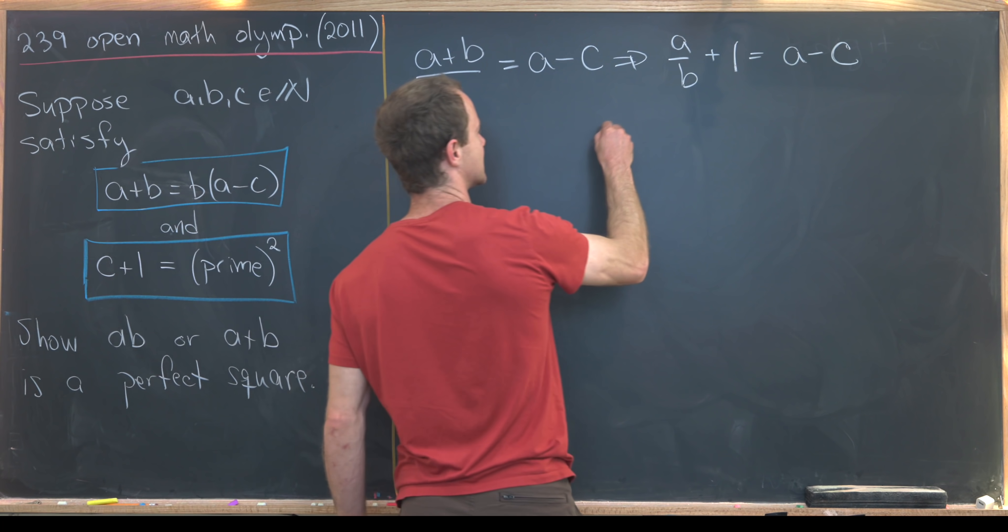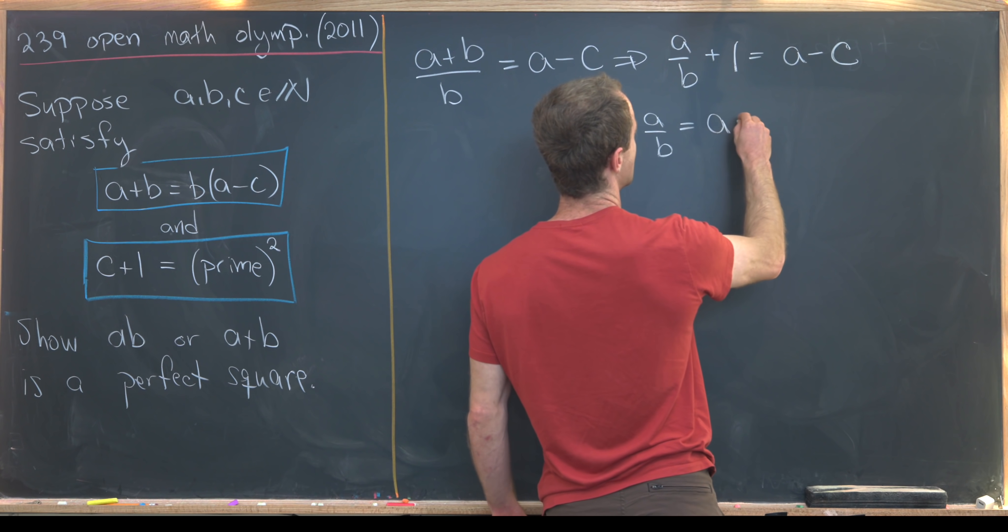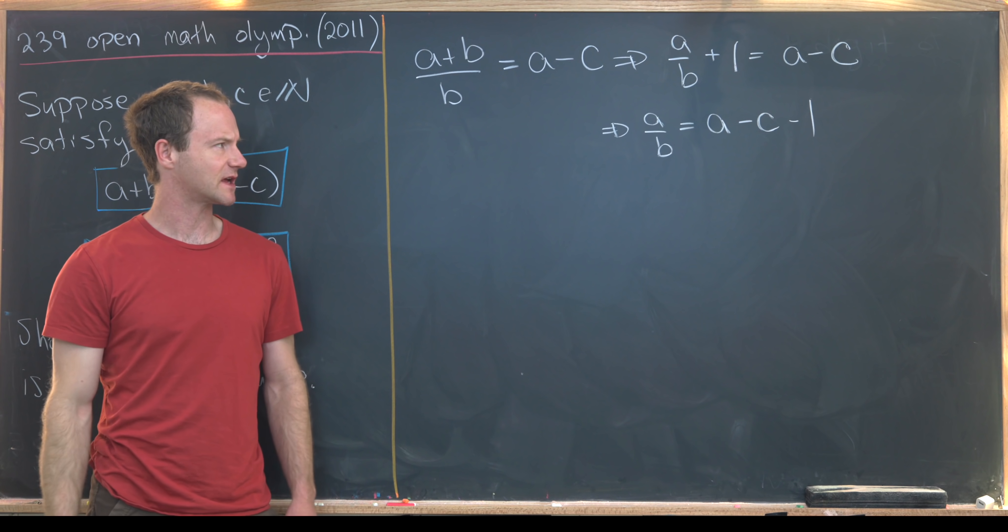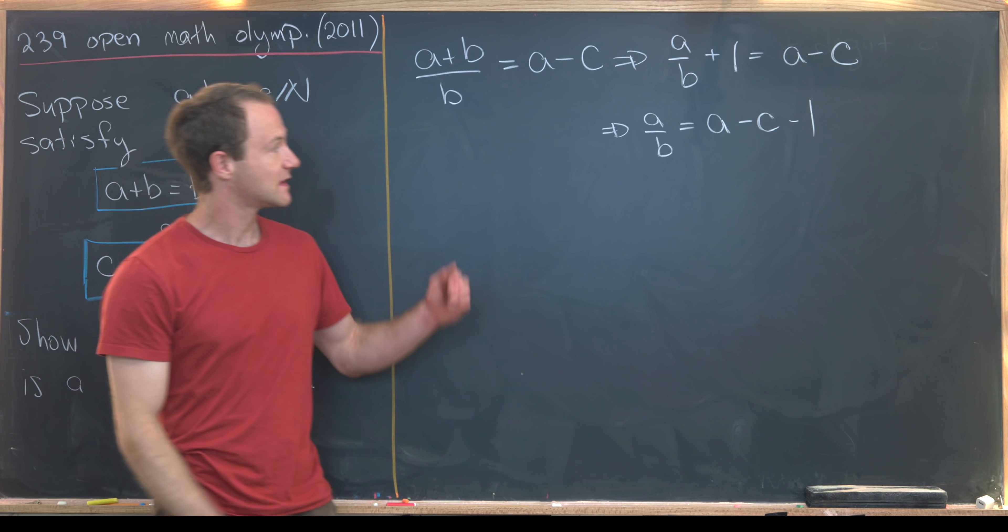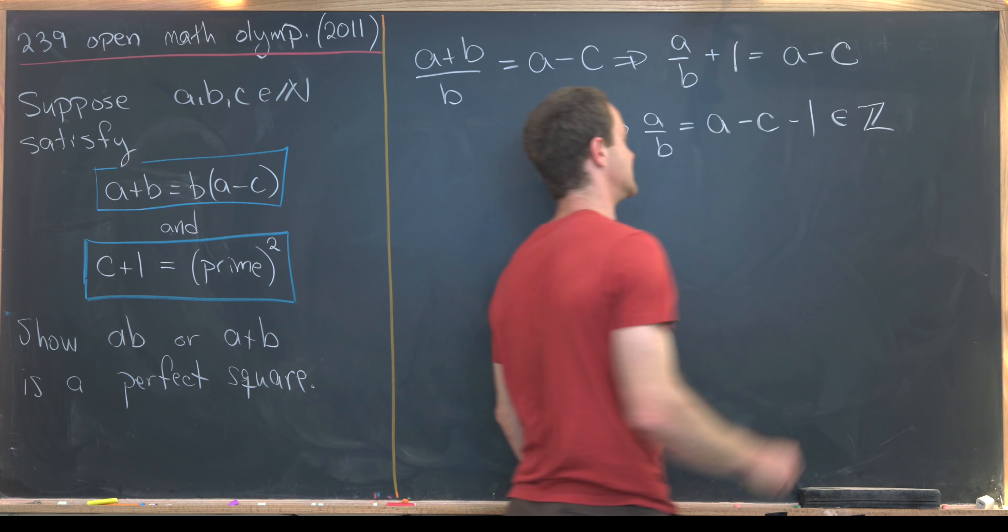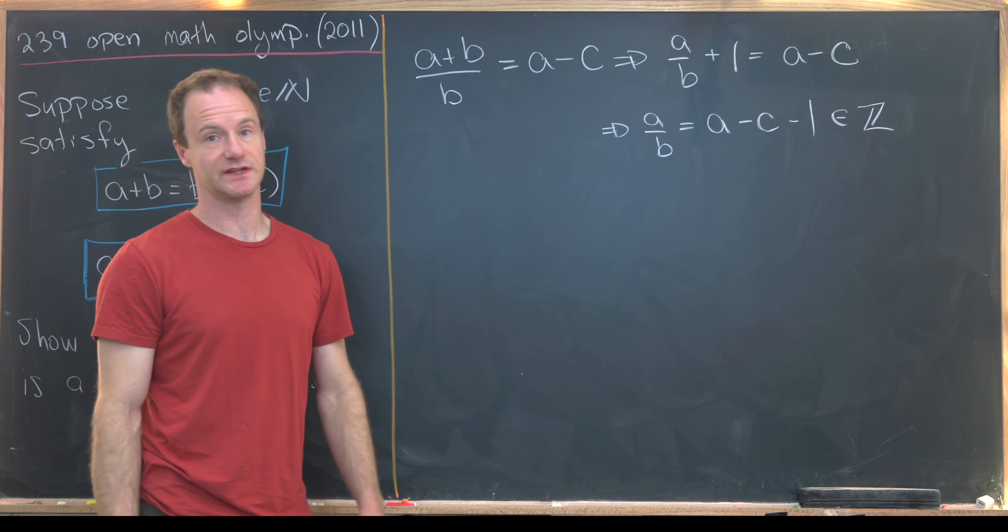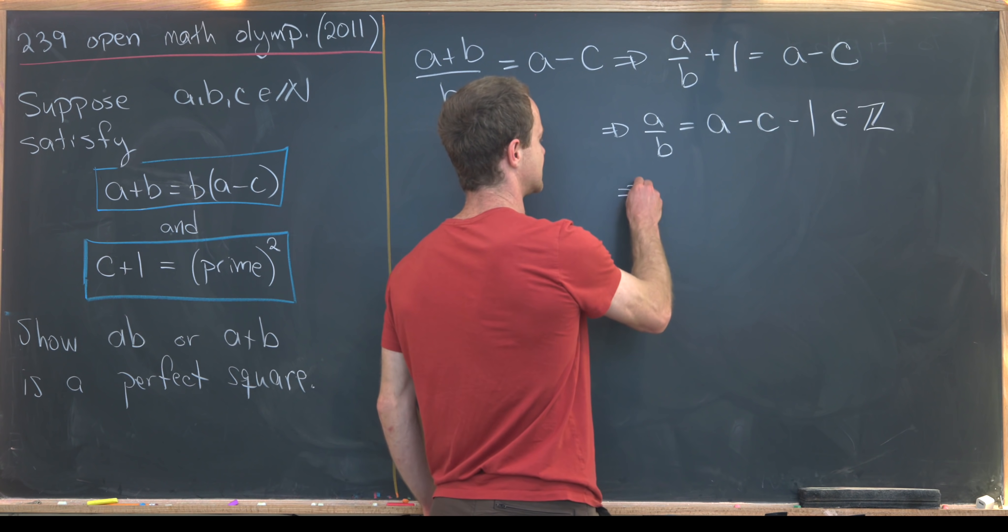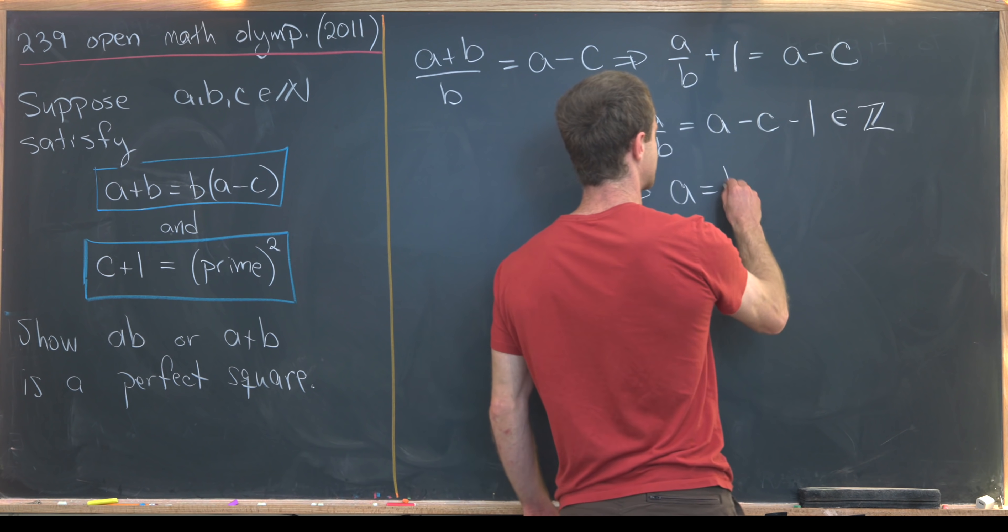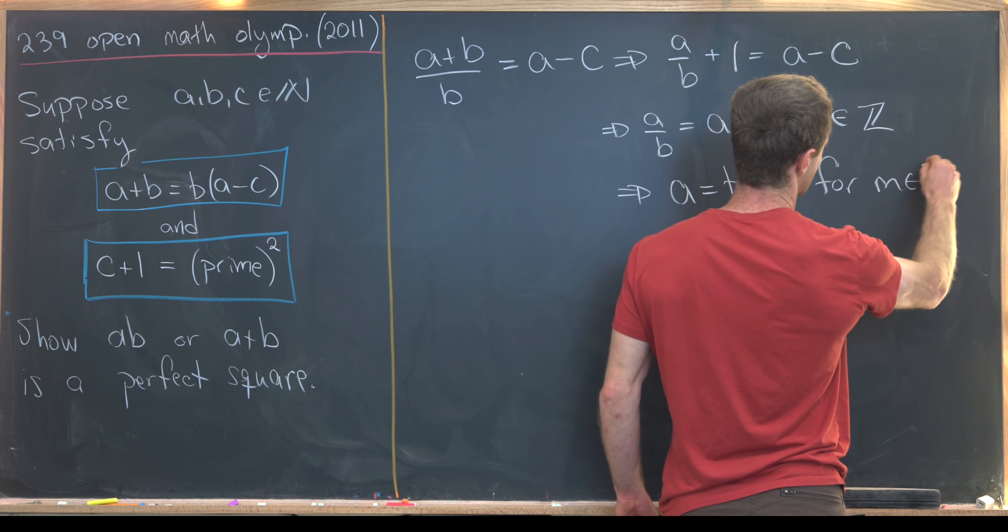But notice that tells us that a/b equals a-c-1, which may not seem super helpful, but let's notice that this right hand side is most definitely an integer. But if this right hand side is an integer, this left hand side is also an integer, but that tells us that a must be a multiple of b. So we'll say that a = bm for some integer m.